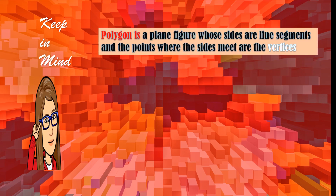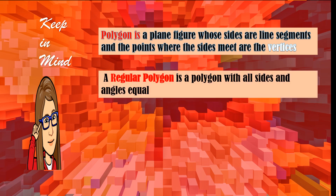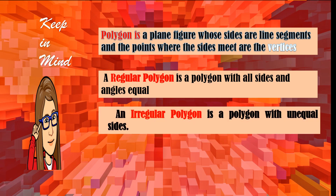Class, keep in mind: a polygon is a plane figure whose sides are line segments, and the points where the sides meet are called vertices. A regular polygon is a polygon with all sides and angles equal. An irregular polygon is a polygon with unequal sides.